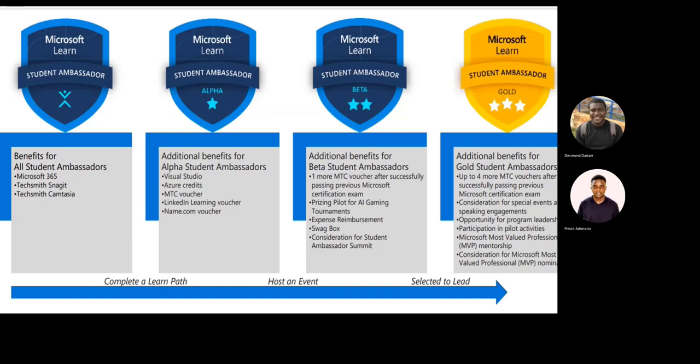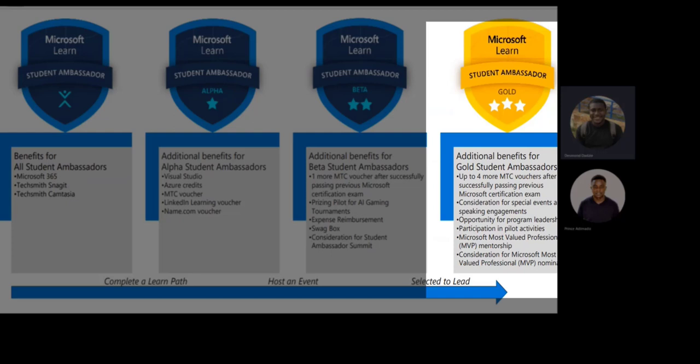From Beta, you get considered for the Microsoft Student Ambassador Summit. If selected to lead, you move to the Gold Student Ambassador level. Gold benefits include four more Microsoft Technical Certification Vouchers, consideration for special events and speaking engagements, opportunity for program leadership, participation in pilot activities, and mentorship toward the Microsoft Most Valued Professional designation.